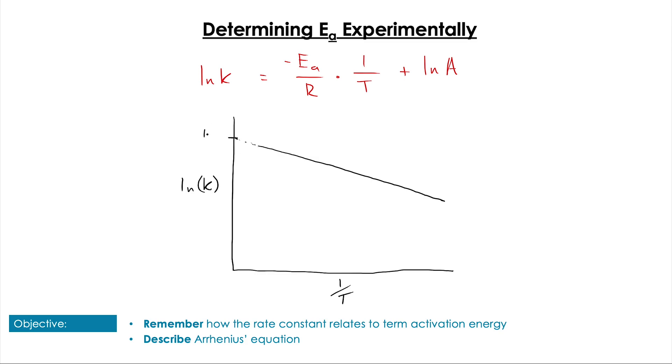This indicates that the y-intercept would be the value of ln A, which doesn't really have much use for us, but it also means that the gradient of the slope of this line is equal to negative activation energy over the universal gas constant.